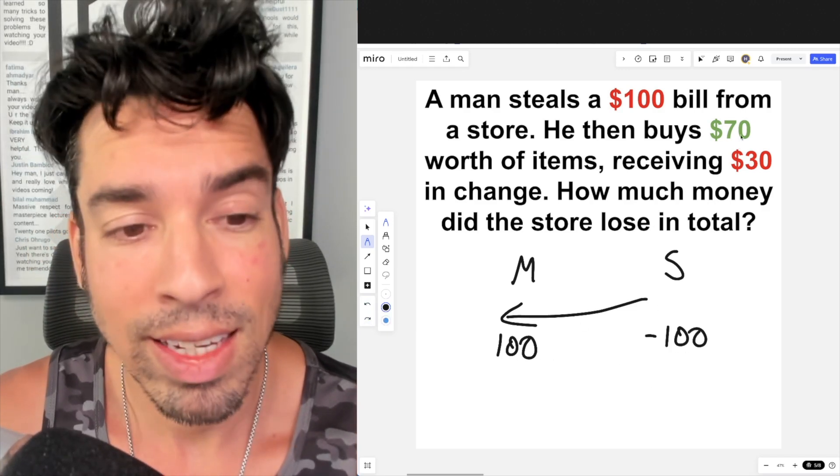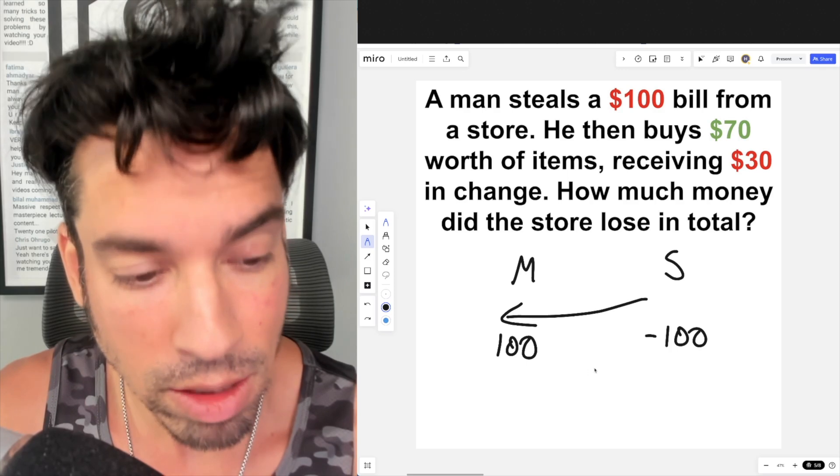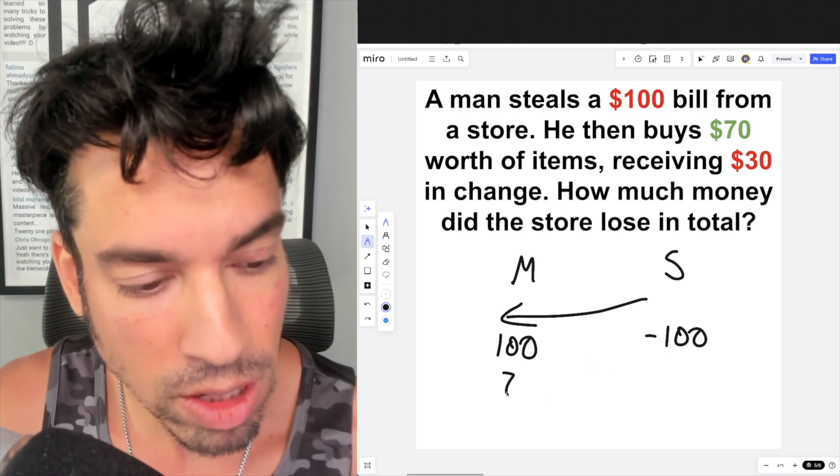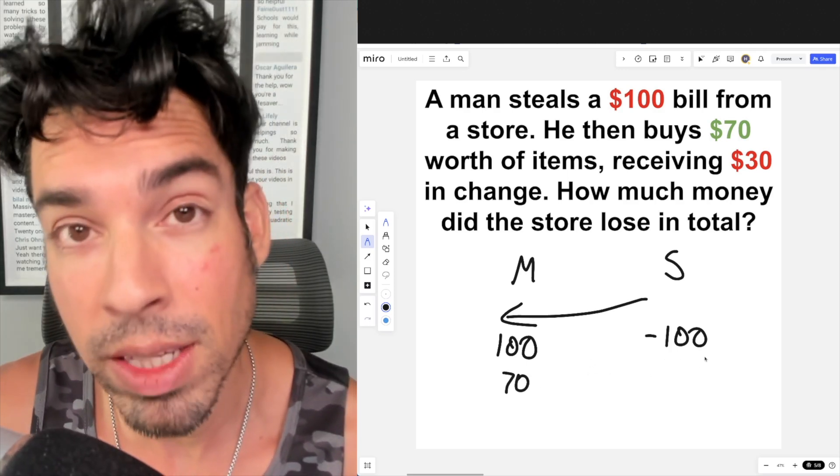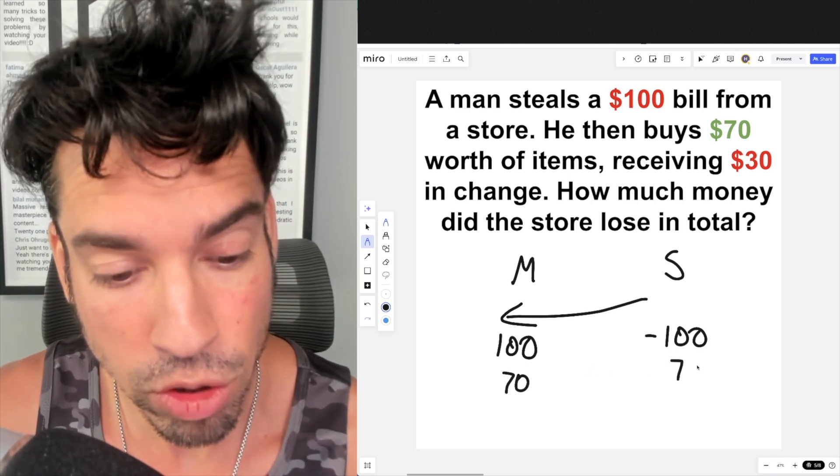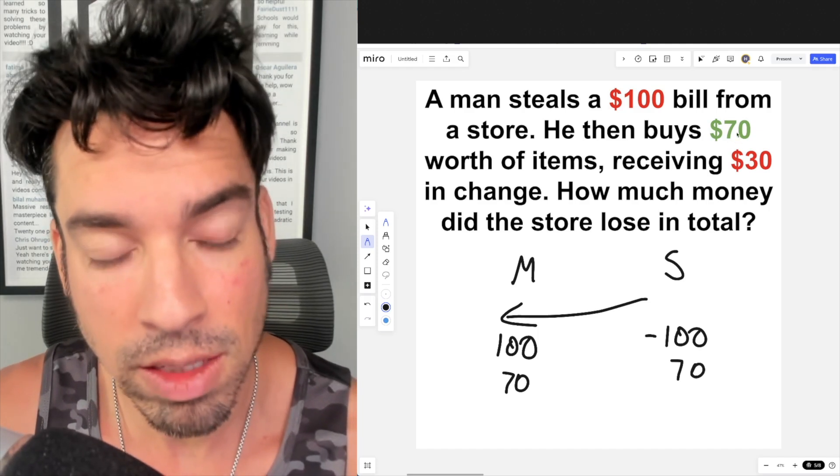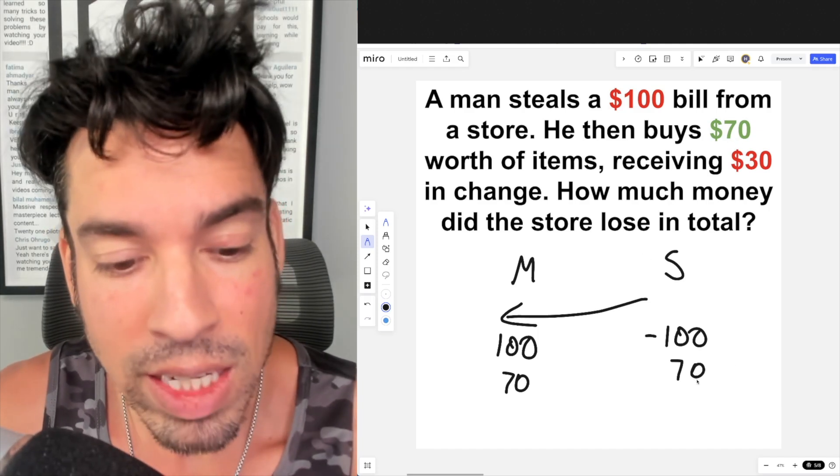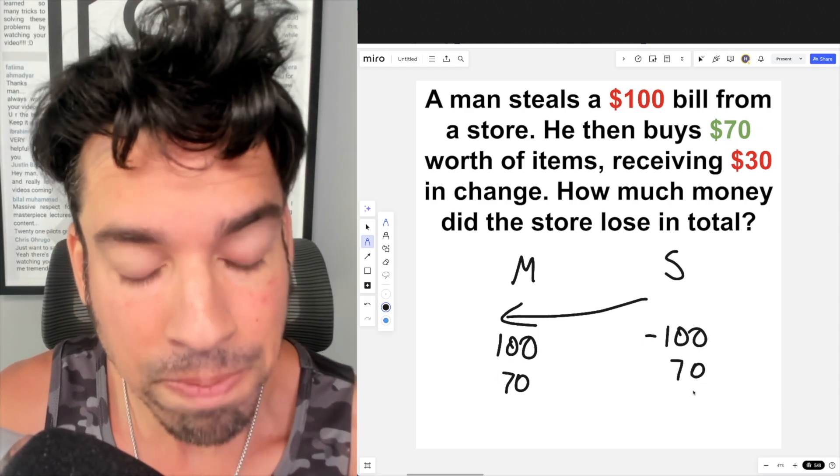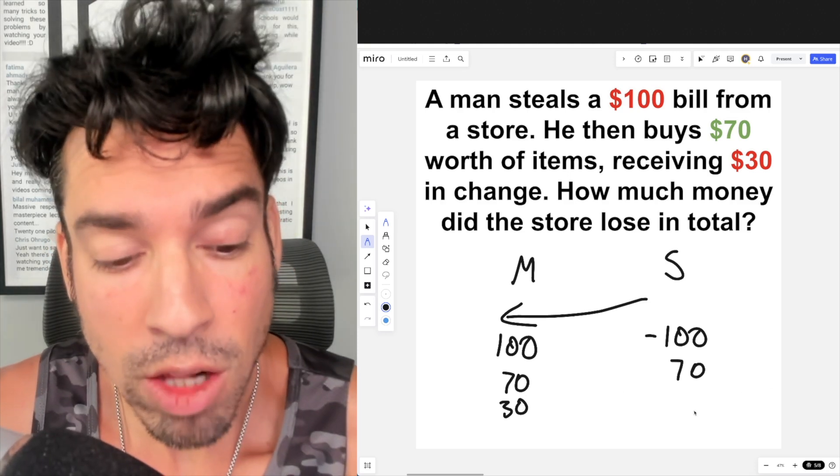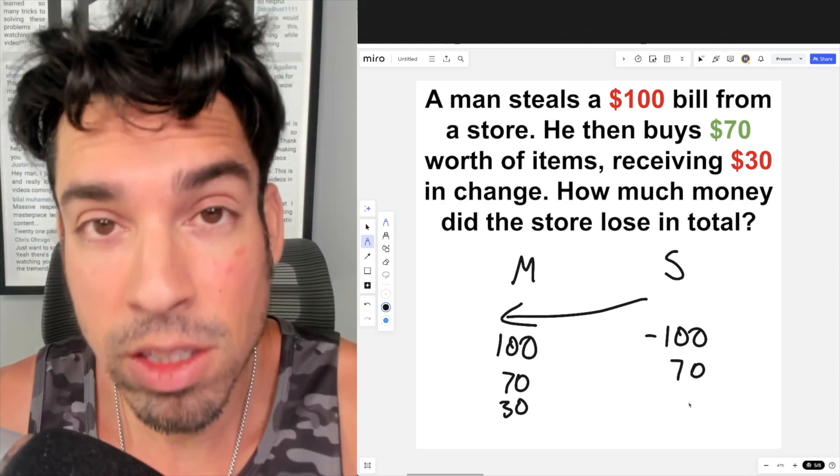Right now the store has lost $100 and the man's got $100. But to get the $70 worth of items, he's getting $70 worth of items but he's also giving the store $70. He's giving them that $70 in cash.